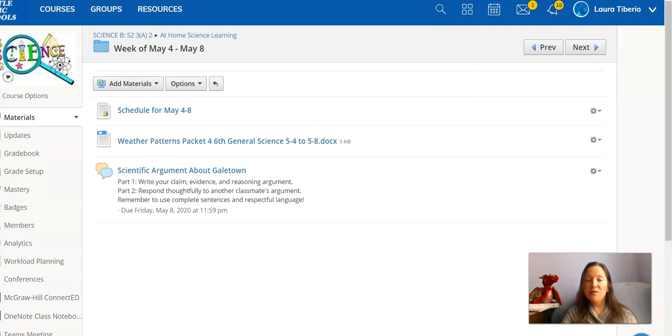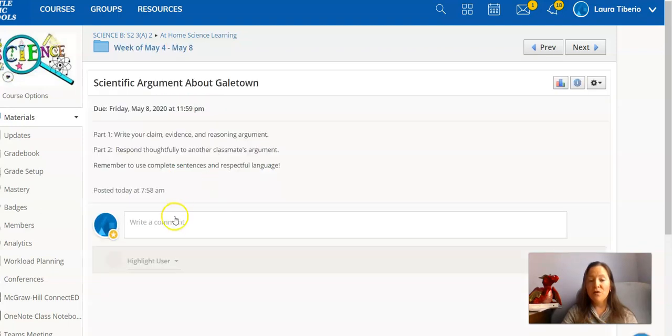So I pulled up my Schoology page. This is for one of my classes. Your Schoology page might look a little different. But what we're looking for if you're doing the scientific argument on Schoology is you'll see these little bubbles. And it should say something about scientific argument about Galetown. And it'll give you your prompts, what you're supposed to do. And then you click on it.